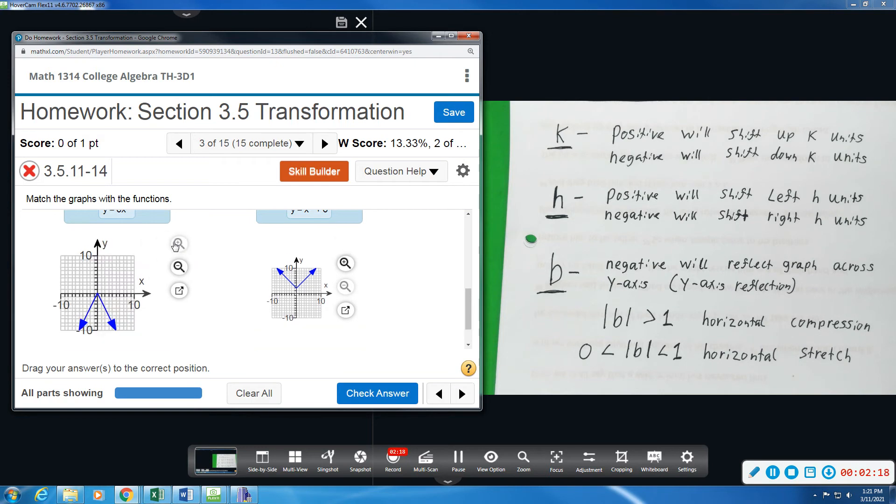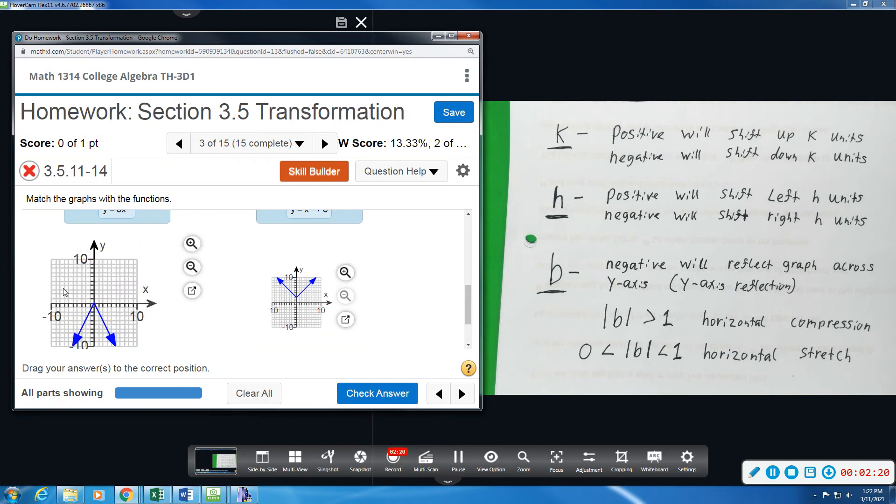This third one looks to be absolute value, and as you can see, this one is wider. That's what the normal one is. This one looks to be a little bit thinner.